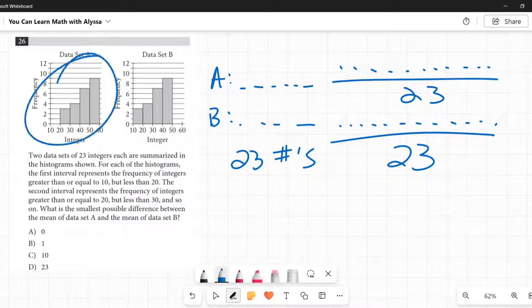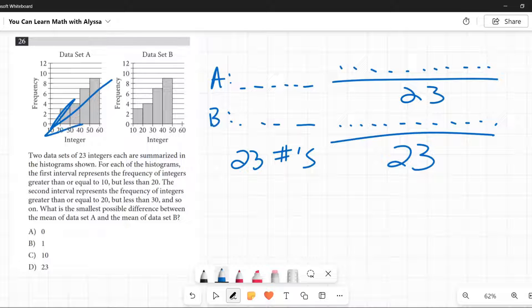Well, over here, data set A, you see how it has higher numbers in it. It's got numbers up in the 50s. It doesn't have any in the 10s. What about data set B? It's got lower numbers. We've got numbers in the teens, but we don't have any numbers in the 60s and the 50s. So if we want to make them close, we want to make data set A as low as possible, the low end of all these ranges. We want data set B to be as high as possible, the highest possible so they can be close.